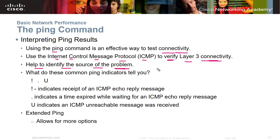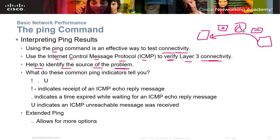Ping also helps identify the source of a problem. If you try to ping an address and you don't get anything back, you can work forward systematically. For example, with an endpoint, a switch, a router, another switch, and another endpoint, you ping the first endpoint, then this side of the router's IP address, then the far side of the router, and then the final endpoint, to determine where connectivity fails.